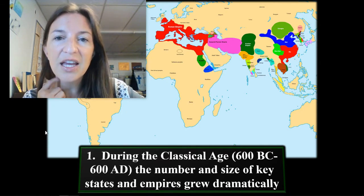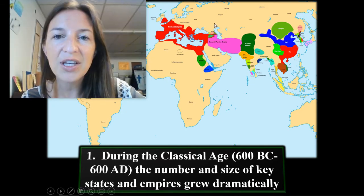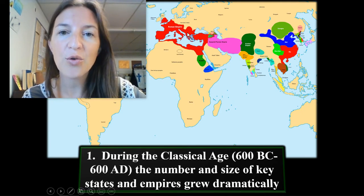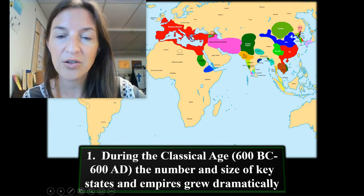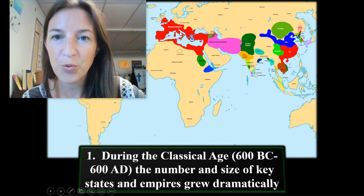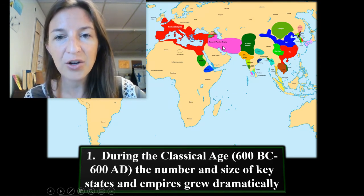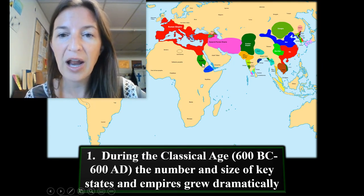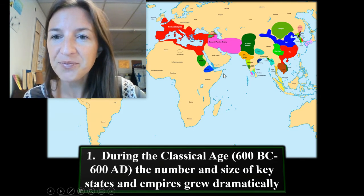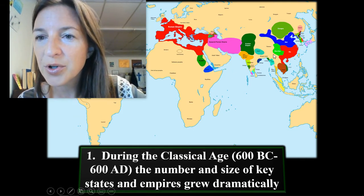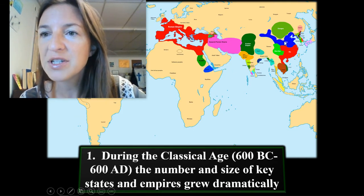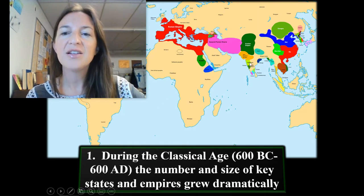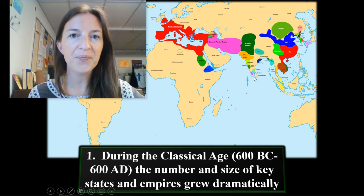During this age, Rome is going to take over Greece — they're going to take the land that Greece had — and you have the Persian Empire here. Kush has a pretty mighty empire down in Africa. There were several different empires going on in China, which we looked at recently, and different empires going on in India as well.